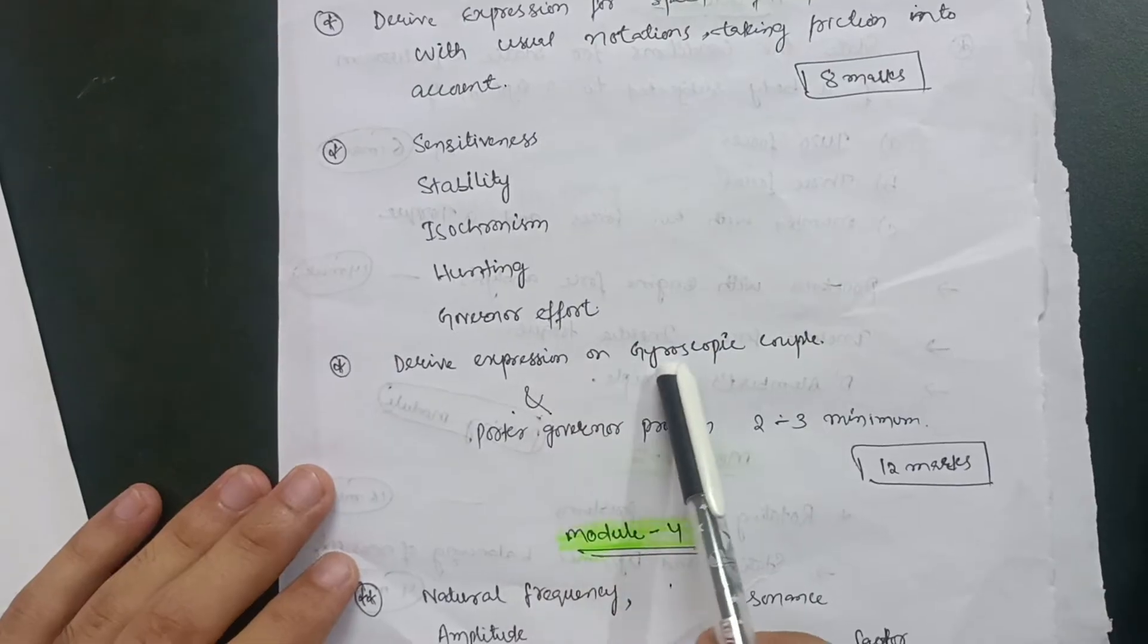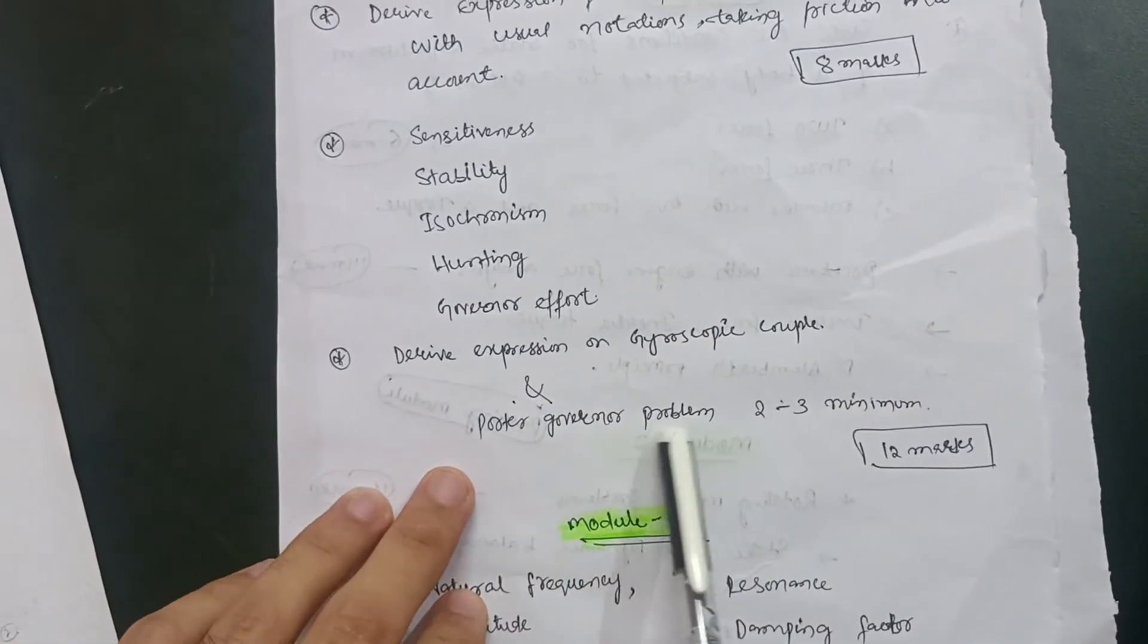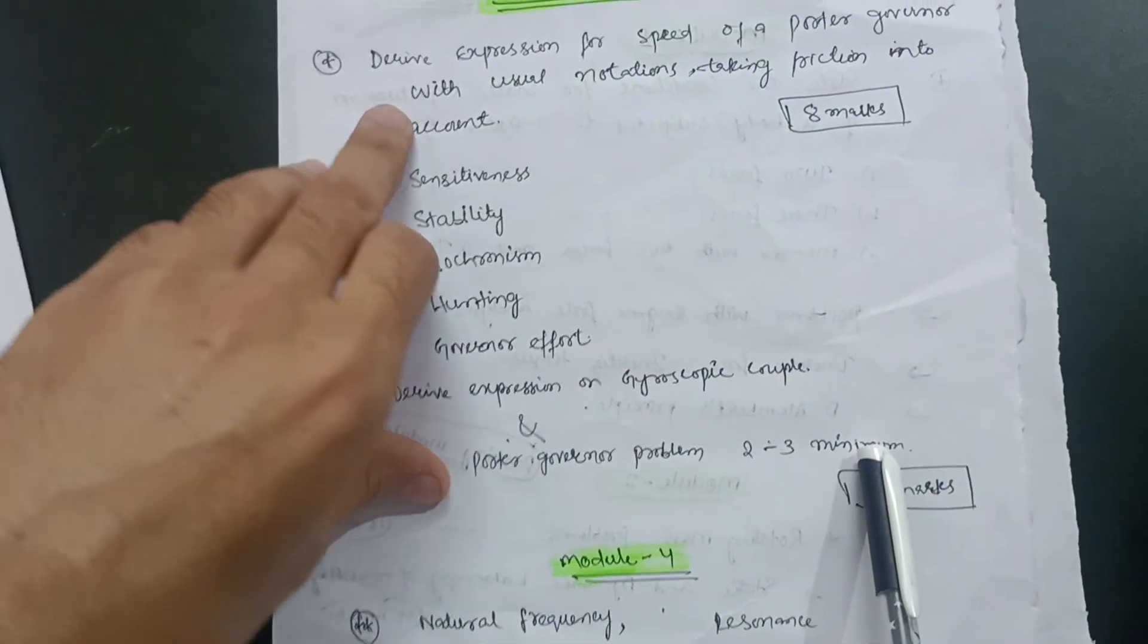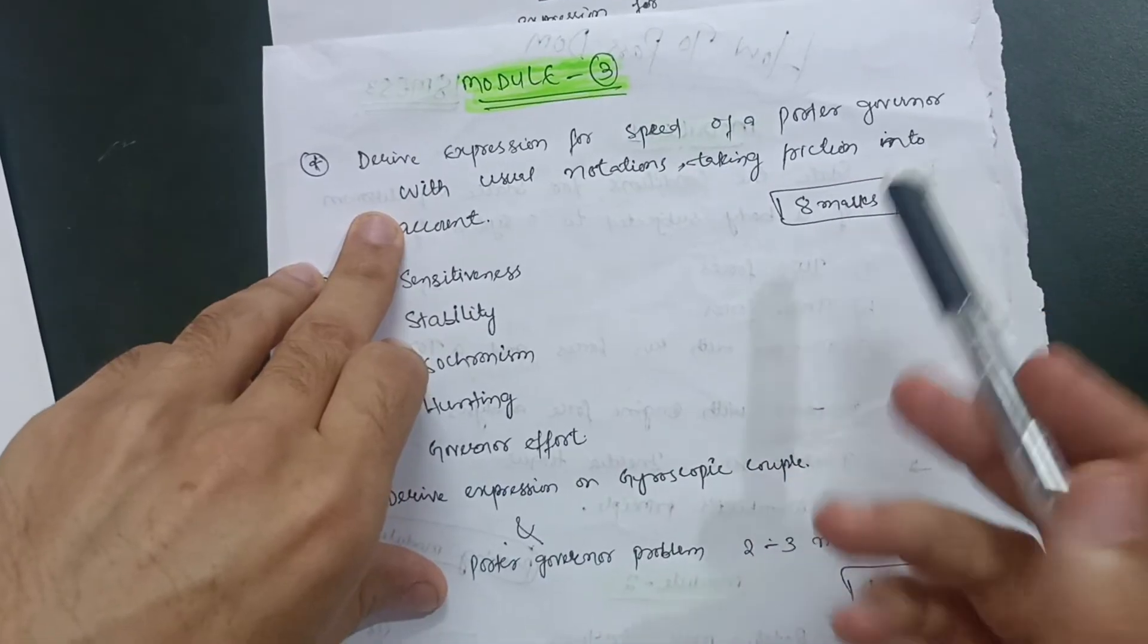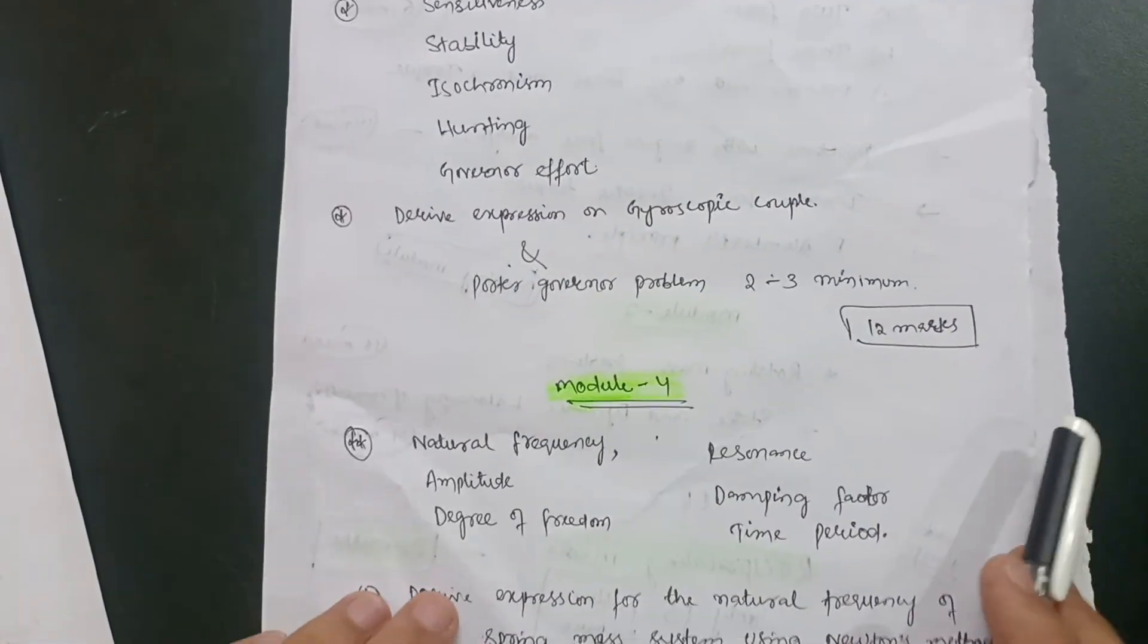These will be the theory questions from this particular third module. Derive expression on gyroscopic couple. Focus on these Porter governor problems, two to three minimum. It is also a simple concept. You have derived the equation for the Porter governor, so the same concept applies in these particular types of problems.